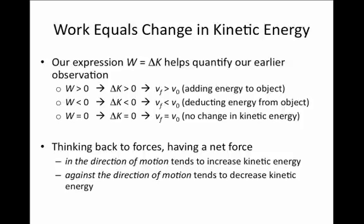So our expression in the work energy theorem, work equals delta K, helps remind us of an earlier observation that we had. If the work is positive, then we said that the final speed would be greater than the initial speed, and that's exactly compatible with the work energy theorem because if work is positive, that means delta K is greater than zero, or in other words we're adding kinetic energy, we're adding speed. If work is negative, then delta K has to be negative and the velocity at the end has to be less than the velocity at the beginning.